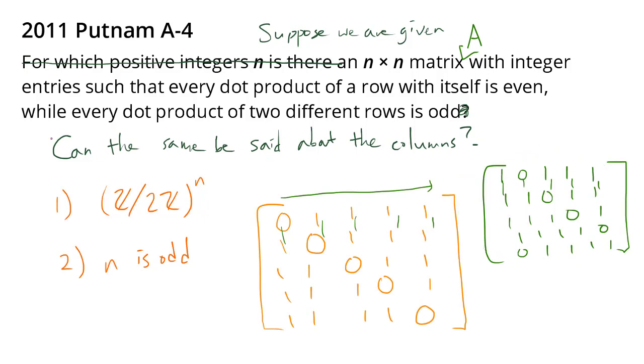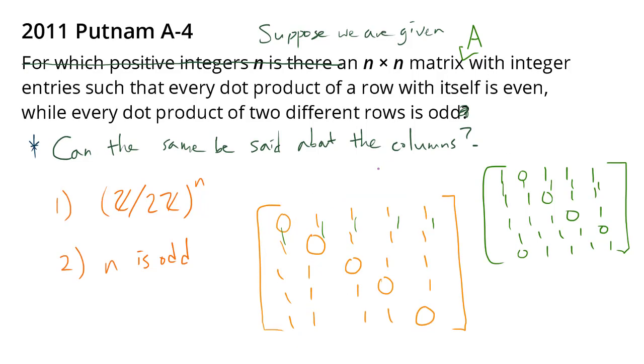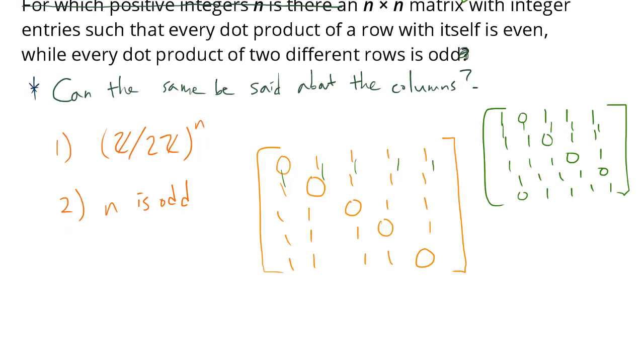Now, of course, one of the reasons we raised this question in the first place was because for this natural matrix, the answer to the question can the same be said about the columns is yes. So I think one way of trying to get some evidence on whether the answer to this follow-up question is yes or no, is to actually try to construct such an A that looks very, very different from this matrix.